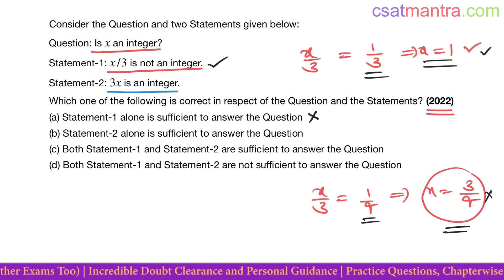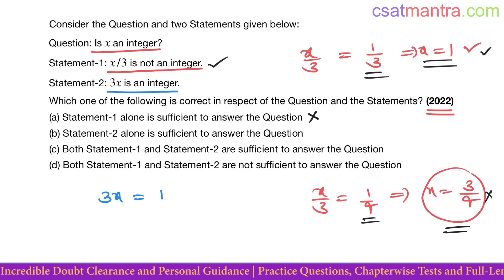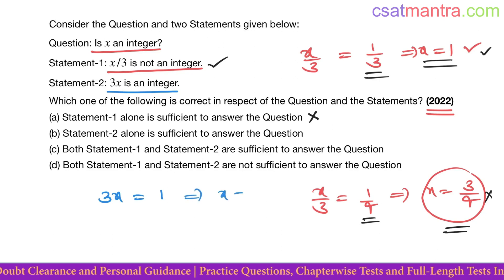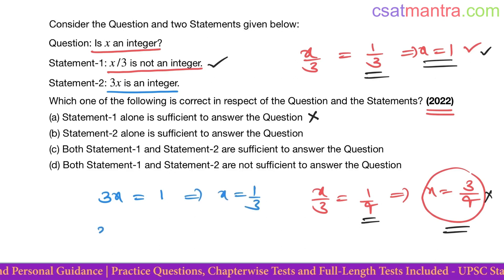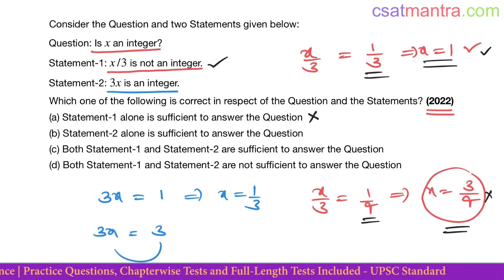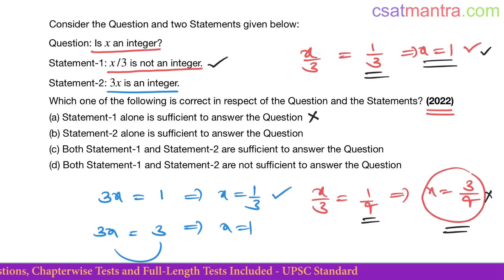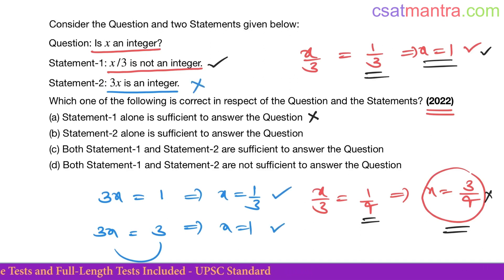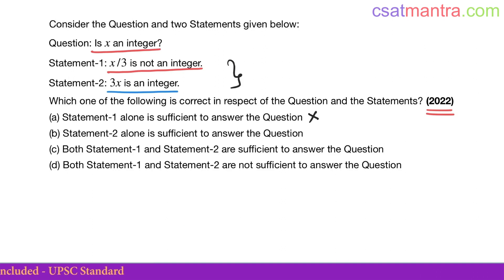Statement 2: 3x is an integer. If 3x=1, then x=1/3, which is not an integer. If 3x=3, then x=1, which is an integer. Again we get contradictory results — not integer in one case, integer in another — so using Statement 2 alone we also cannot answer this question.